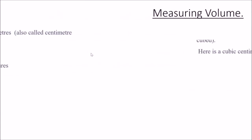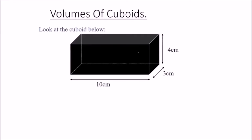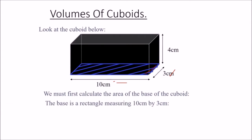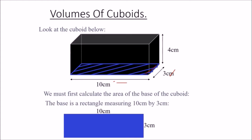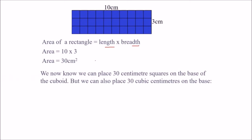Now we will see how to calculate the volume of various shapes. For a cuboid, we first calculate the area of the base — length multiplied by width, which is 10 into 3, giving us an area of 30 centimeter square.